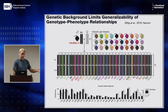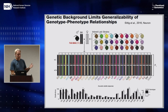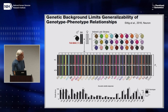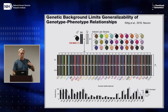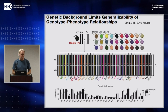Half C57 Black 6, half something else. You can go look at the paper yourself. These backgrounds all affect the trait, but the backgrounds also affect — in some cases — the direction in which the mutation changes the phenotype. So it's just one example, and there are many, many more.